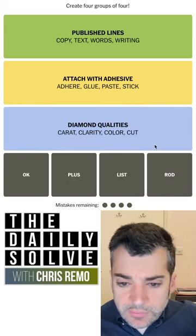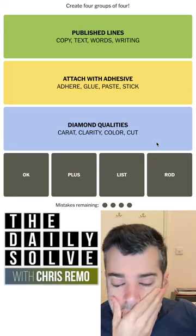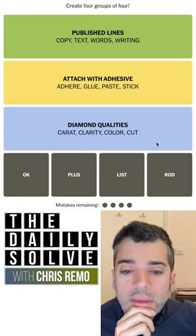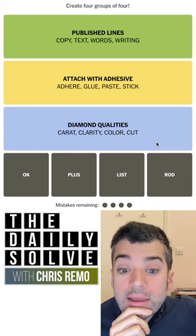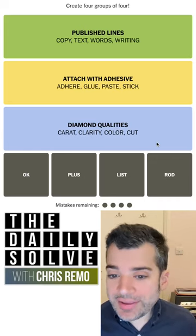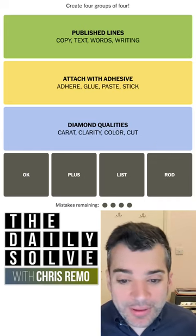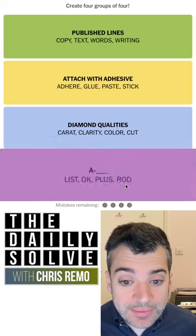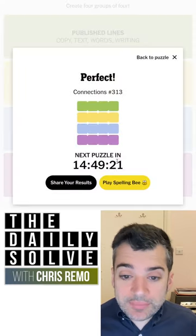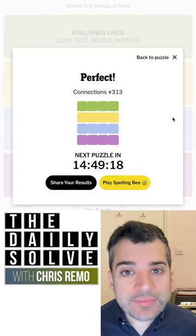Plus list rod. A-okay — yeah, A-OK. A plus a list or a rod, who I think is a baseball player. There we go, I think that's it. And A-dash-blank — yep, there we go. Those were the connections. Back tomorrow, bye for now.